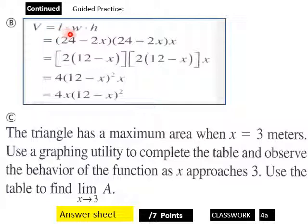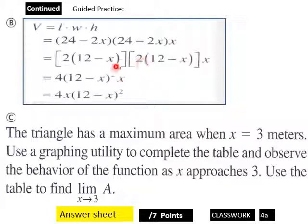Volume equals length times width times height. We have (24 minus 2x) squared times x. Factoring out a 2 gives 12 minus x, giving us 2 times (12 minus x) within a bracket multiplied by x. This simplifies to 4 times (12 minus x) squared times x, which equals 4x times (12 minus x) squared — verifying what was given.